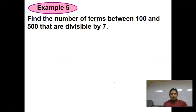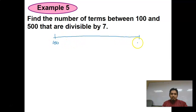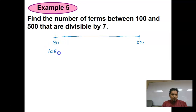Find the number of terms between 100 and 500 that are divisible by 7. Using a calculator, the first number greater than 100 divisible by 7 is 105, and the next is 112. The last number below 500 divisible by 7 is 497.